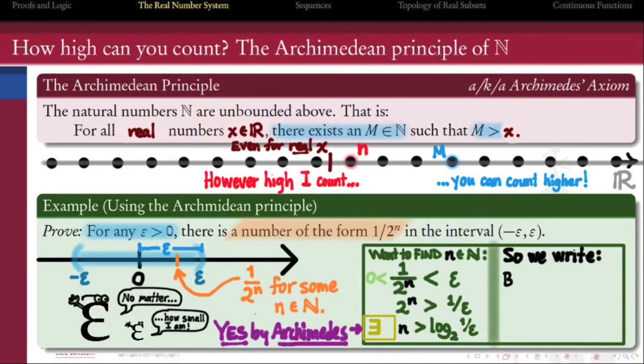To write the proof in the forward direction, we would begin by saying, by the Archimedes principle, there exists a natural number n such that n is greater than the base 2 log of 1 over epsilon.